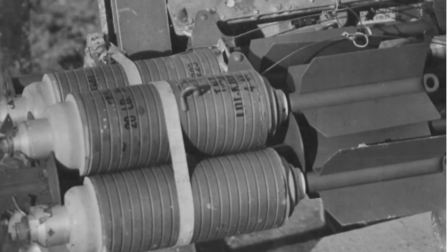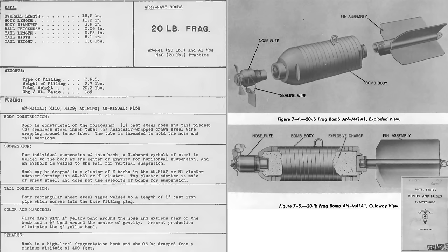Let's review characteristics and operation of the 20-pound M41 fragmentation bomb. This chart from a 1945 US Navy bomb disposal document outlines characteristics and provides an image of the components and a cutaway of the M41 fragmentation bomb. Overall, the bomb is 19.5 inches in length, 5.1 inches in width, and weighs 20.3 pounds. The bomb's explosive fill is 2.7 pounds of TNT. The bomb adopted the AN-M 110-A1 nose fuse. The M41 does not have a tail fuse.